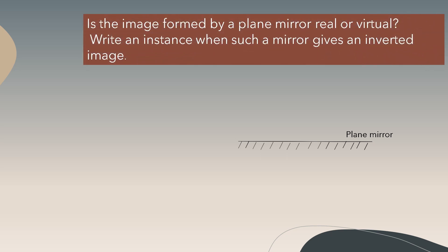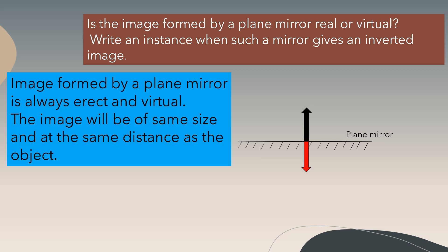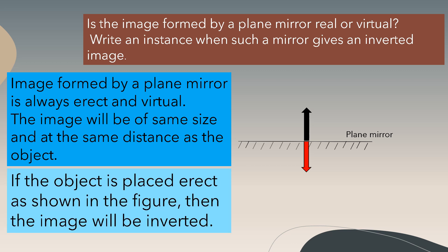The image formed by a plane mirror is virtual. Now let's see an instance when such a mirror gives an inverted image. The image formed by a plane mirror is always erect and virtual, of the same size and at the same distance as the object. However, if the object is placed erect as shown in the figure, then the image will appear inverted.